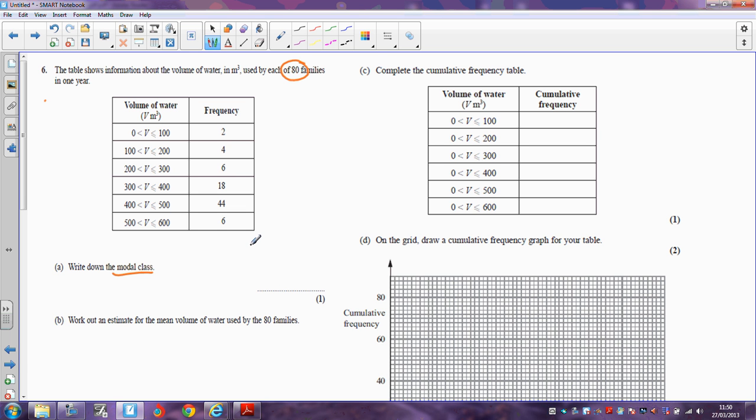Now mode means, in this case, the class which occurs most often, which is this group. It's got a frequency of 44. So the modal class, you can either write it exactly like that or you could write it as 400 to 500. You'd probably get away without writing cubic metres but you should write cubic metres there.